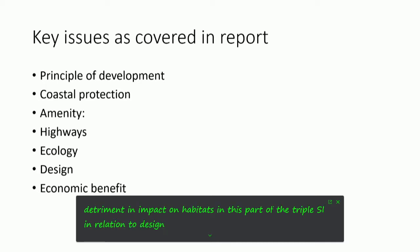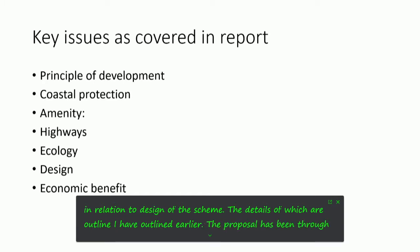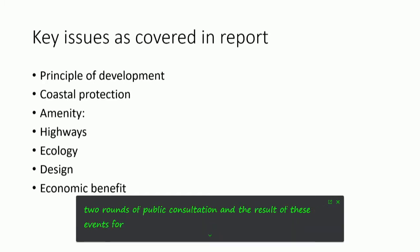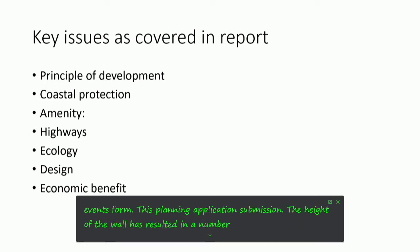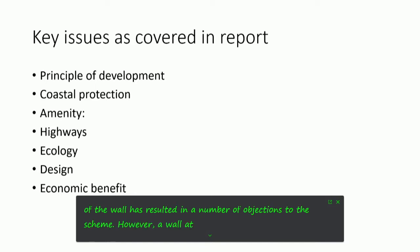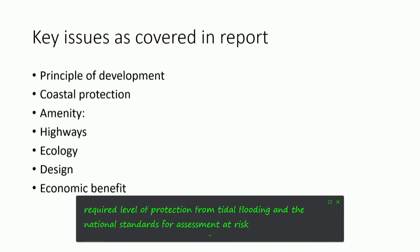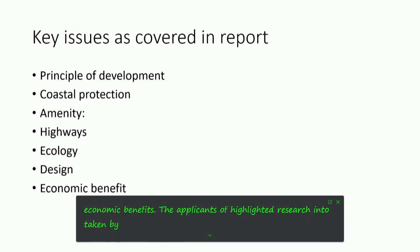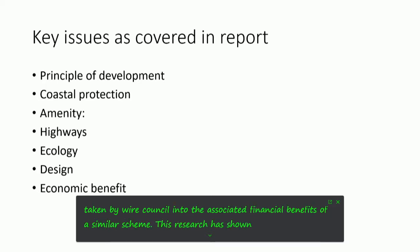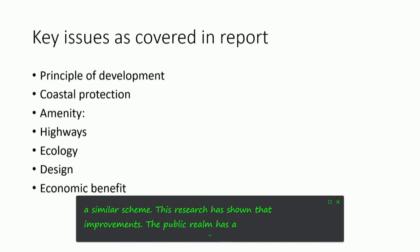In relation to design of the scheme, the proposal has been through two rounds of public consultation, and the result of these events formed this planning application submission. The height of the wall has resulted in a number of objections to the scheme. However, a wall at a lower height will not meet the required level of protection from tidal flooding and the national standards for assessment of risk. In relation to the economic benefits, the applicants have highlighted research by Wirral Council into the associated financial benefits of a similar scheme. This research has shown that improvements in the public realm have the potential to boost the visitor economy.